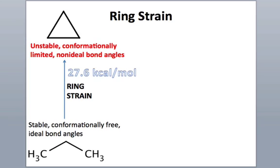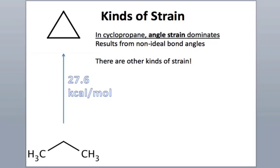We can divide ring strain up into a couple of different components. In cyclopropane, the primary kind of strain is called angle strain. It's called that because the bond angles in cyclopropane are non-ideal. The bond angles deviate from the ideal 109.5 that we've seen in the bottom case here, and they deviate to 60 degrees, and that substantial deviation introduces destabilization.